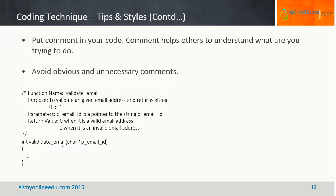Here we have a function called validate_email, which takes a character pointer to an email ID, validates it, and returns an integer. This is a C programming example. The comment documents the function name, its purpose, the parameter p_email_id and what it does, and the return value — 0 for a valid email address and 1 for an invalid one. Anyone using this function knows that a return value of 0 means validation succeeded, making the code much more readable.